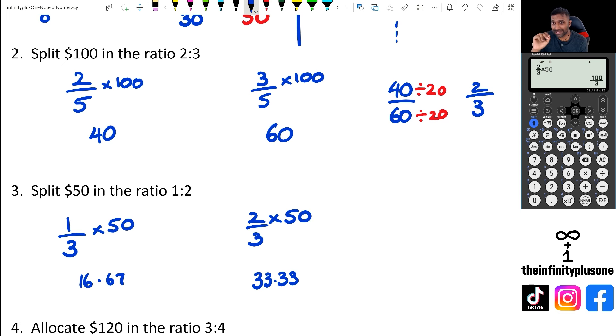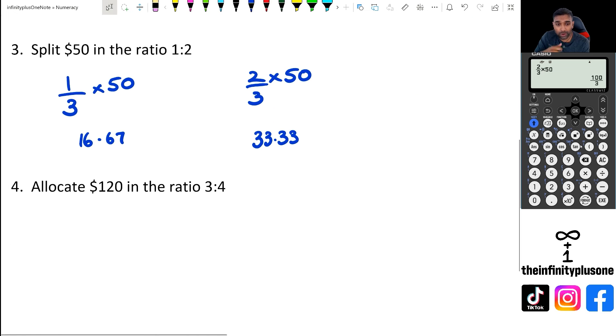What about question four? How about you folks have a try with this question and then I'll go through it. Pause the video, try the question, and then I'll go through the answers. Hopefully you had a chance to do that. So what we've got is seven parts in total, so that's three out of seven and then we've got four parts on this side. We're going to multiply by 120 and 120 for both sides.